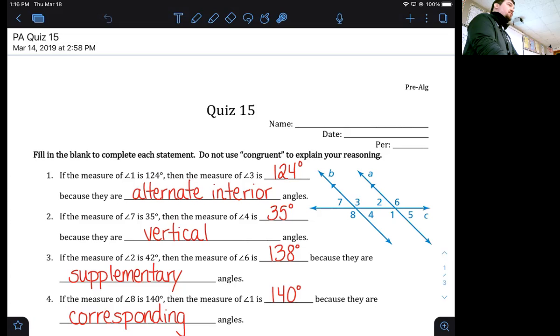And alternate interior angles are congruent, so angle three is going to be 124 degrees. Number two, if angle seven is 35 degrees then the measure of angle four would be what? Well, they're vertical angles.